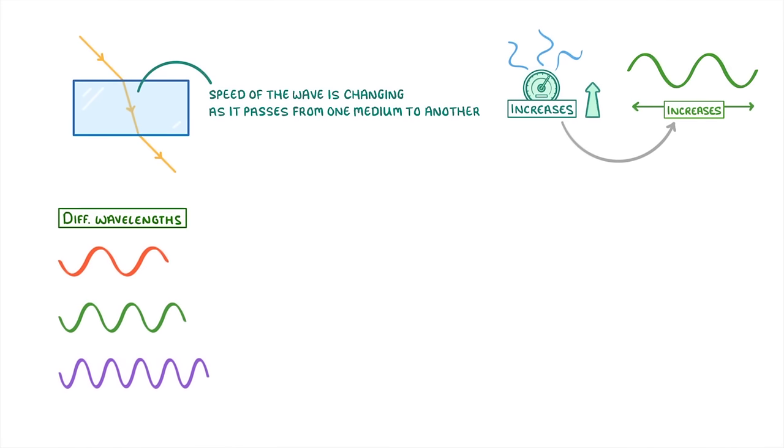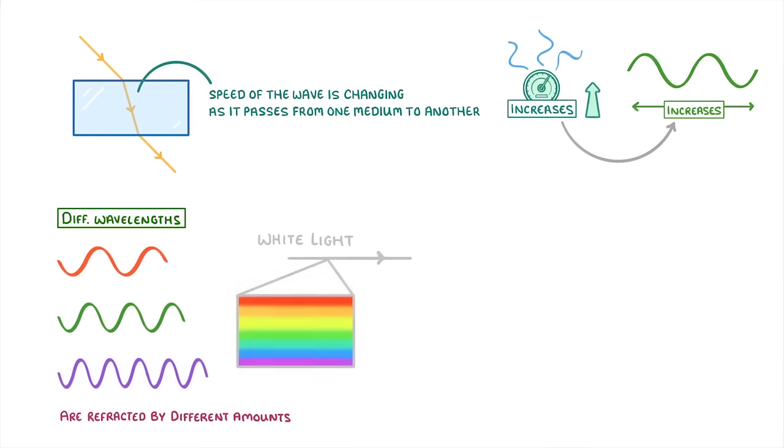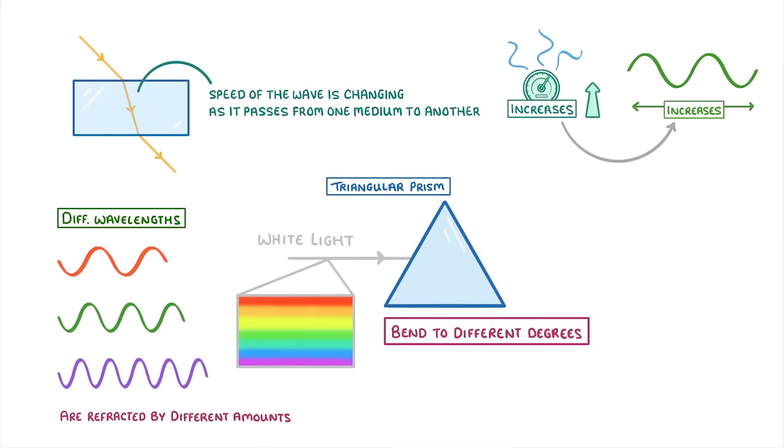Interestingly though, different wavelengths of light are refracted by different amounts. And this means that if we put white light, which contains all the wavelengths of visible light, through a triangular prism, then the different colors will bend to different degrees. And so they'll all spread out like a rainbow.